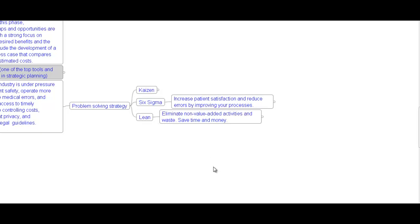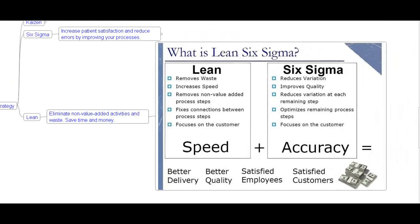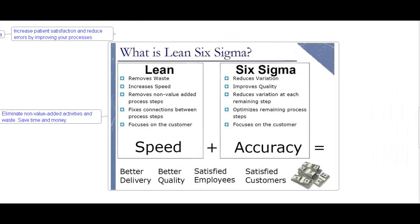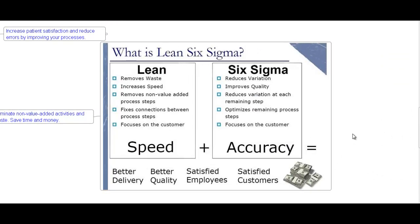Lean eliminates non-value-added activities and waste, saving time and money. Lean focuses on removing waste, increasing speed, removing non-value-added process steps, fixing connections between process steps, and focusing on the customer. Six Sigma reduces variation, improves quality, reduces variation in remaining steps, optimizes remaining process steps, and focuses on the customer.